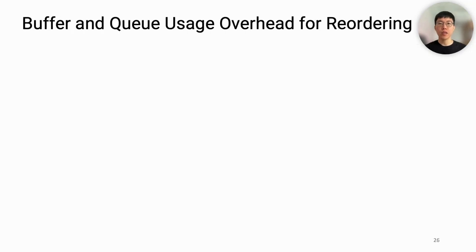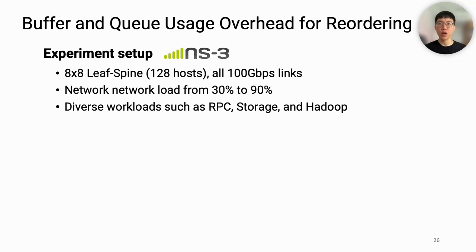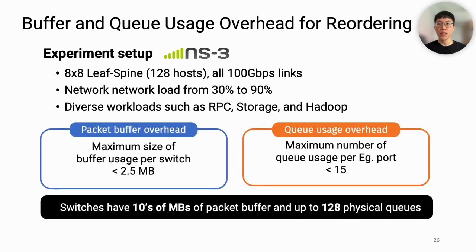The main cost of Convive is the packet buffer and queue usage overhead for packet reordering on switches. To understand this overhead, we ran a simulation on 128 hosts with 100G ports under diverse network loads and workloads such as RPC, storage, and web search. We find that maximum buffer usage per switch is less than 2.5 MB, and maximum queue usage is less than 15 queues per egress port. This overhead is much lower than the capacity of recent programmable switches, which have tens of megabytes of buffer and hundreds of physical FIFO queues.